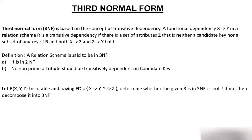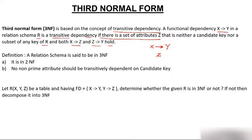The definition says third normal form is based on the concept of transitive dependency. A functional dependency X→Y in a relational schema R is a transitive dependency if there is a set of attributes Z that is neither a candidate key nor a subset of any key of R, and both X→Z and Z→Y hold.